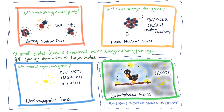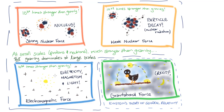After distances much smaller than atoms, the strength of both forces is essentially zero, so they don't end up having an effect at large scales. As for electromagnetism, celestial bodies usually have as much positive charge as negative charge, so they're electrically neutral and don't generate or interact with electric fields.